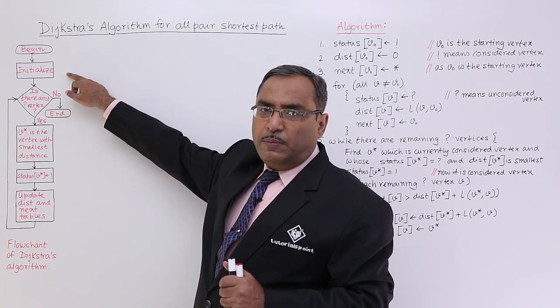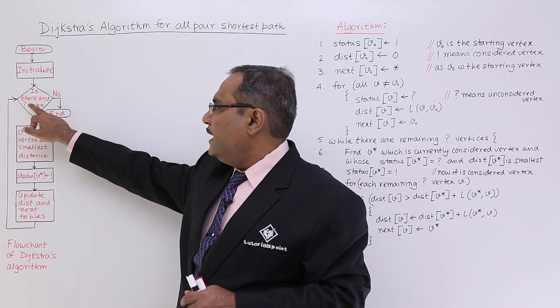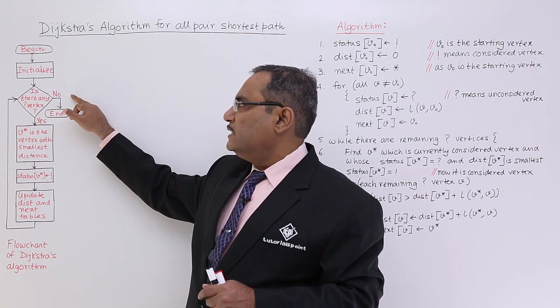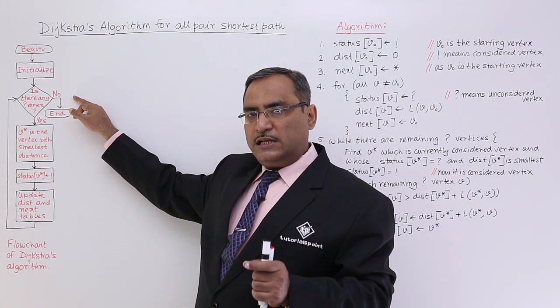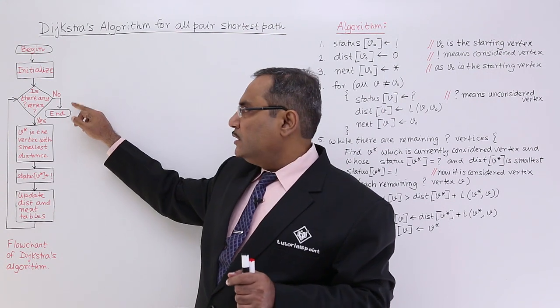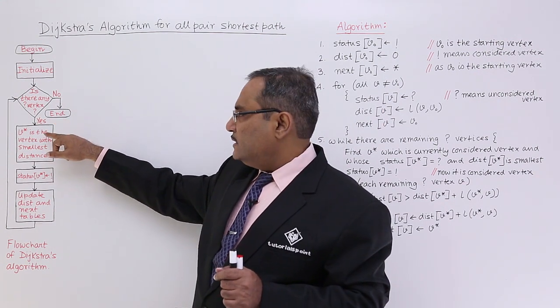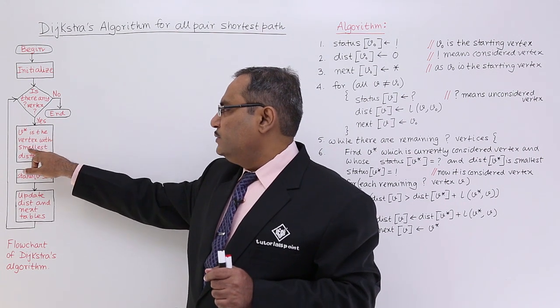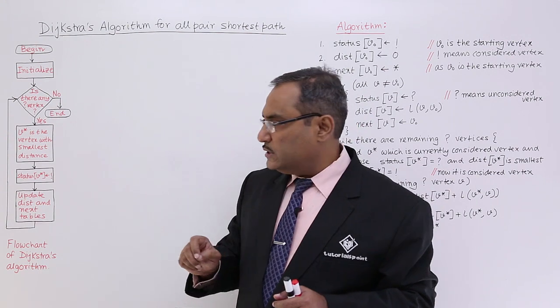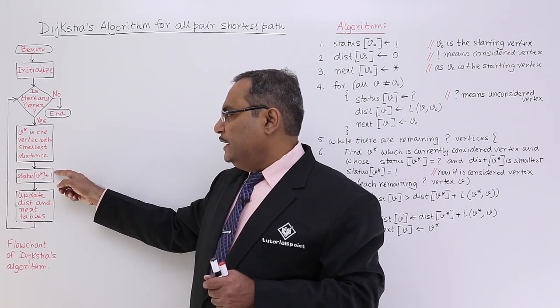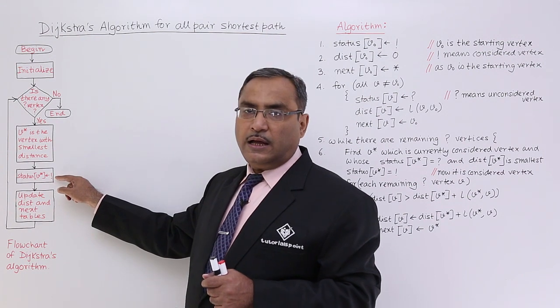Initialize means step number 1, 2, 3 as well as 4, and then if there are any question mark vertex, if the answer is no that means all vertices have got considered and their status value has become exclamation. So go to end. Otherwise if it is yes, then V star is the vertex with the smallest distance and obviously with the status value equal to question mark, and then update that question mark by replacing this exclamation.